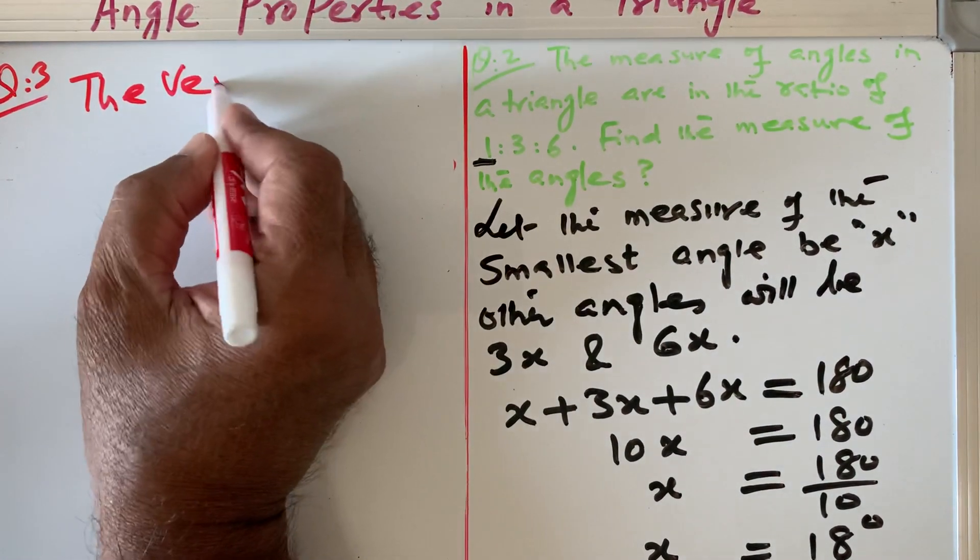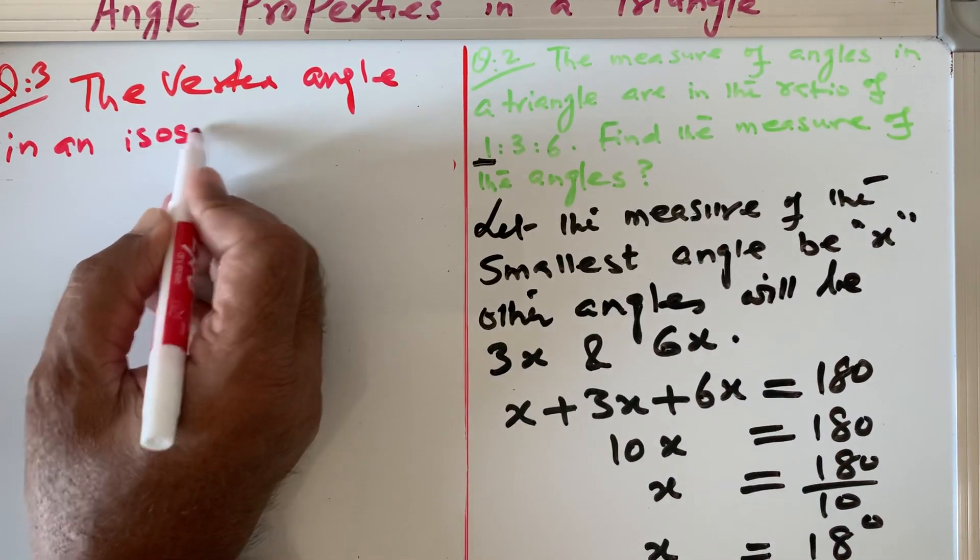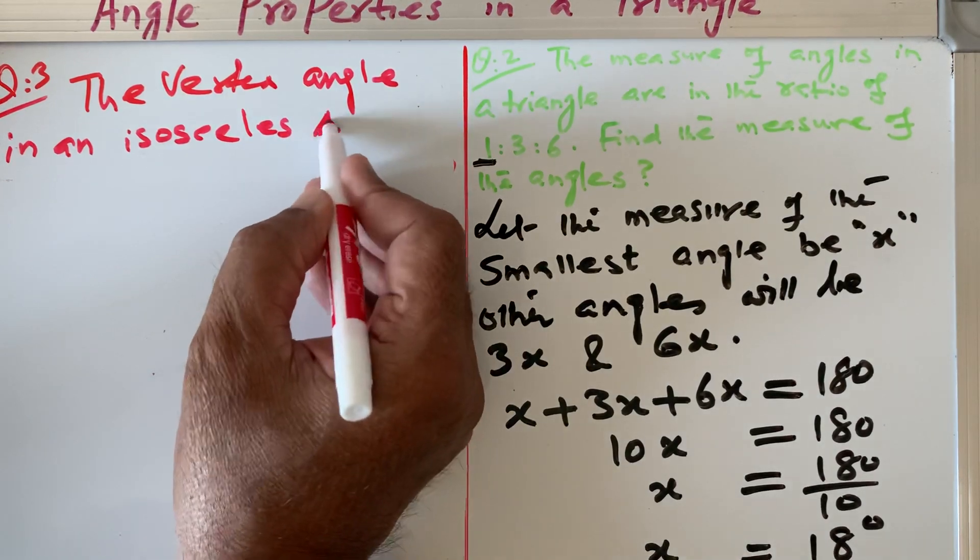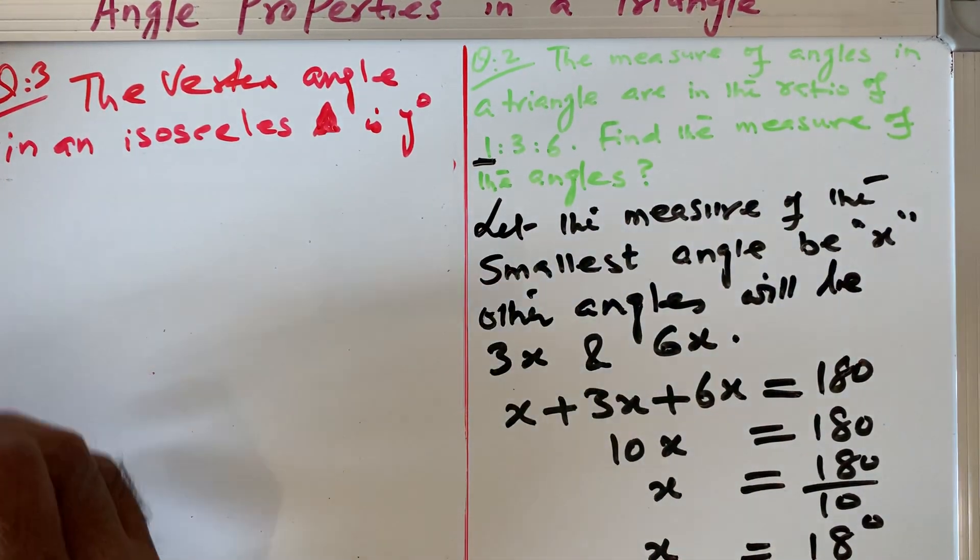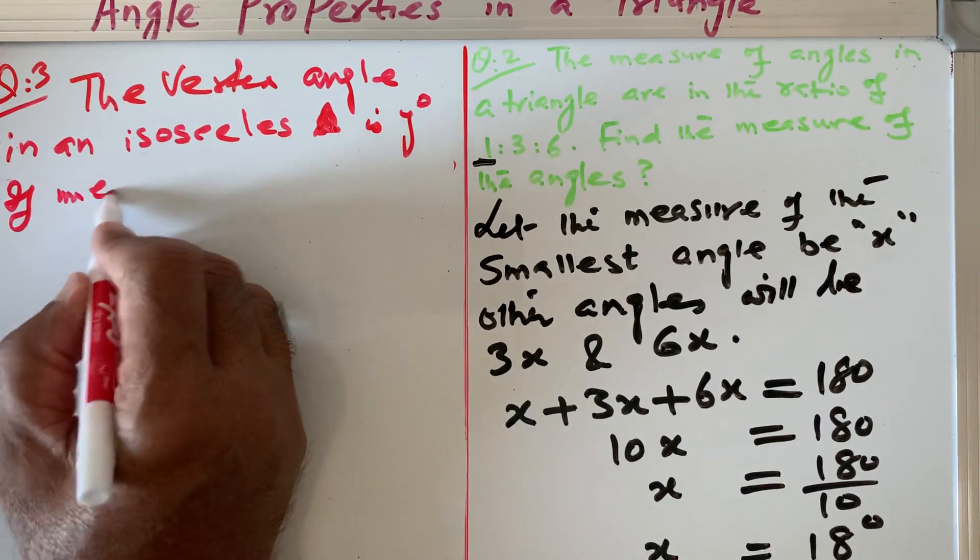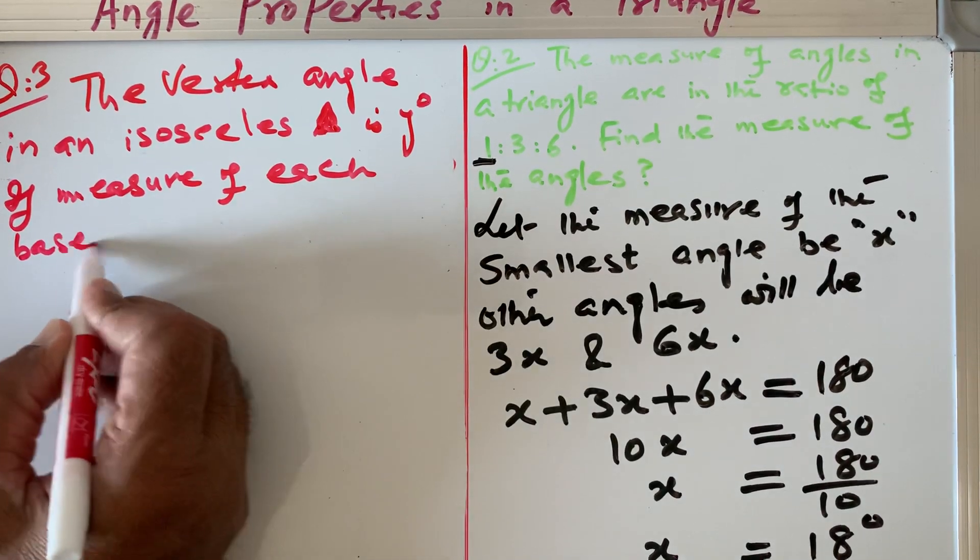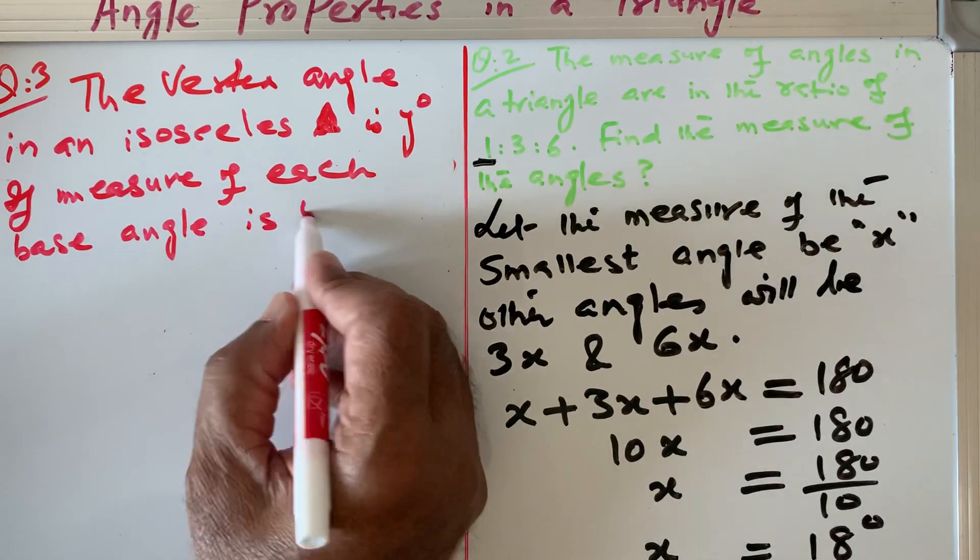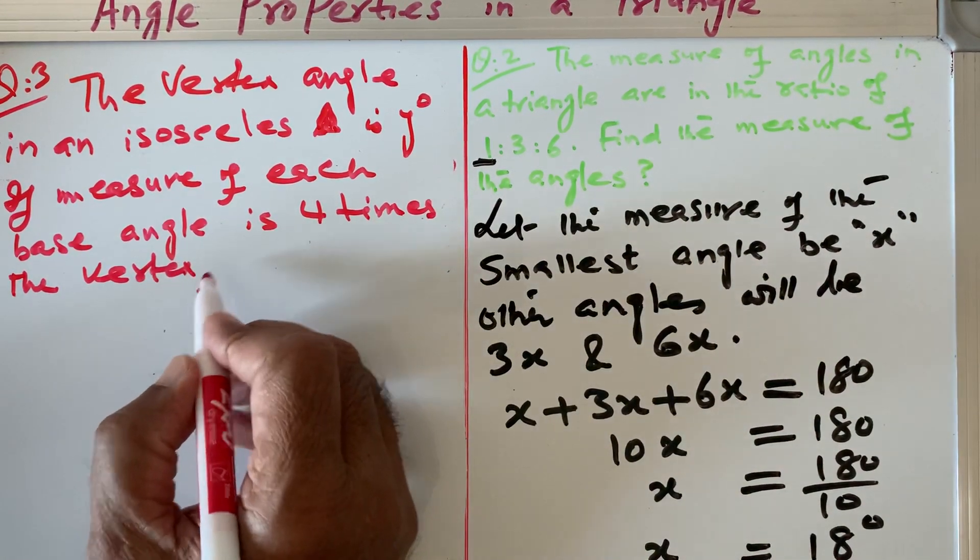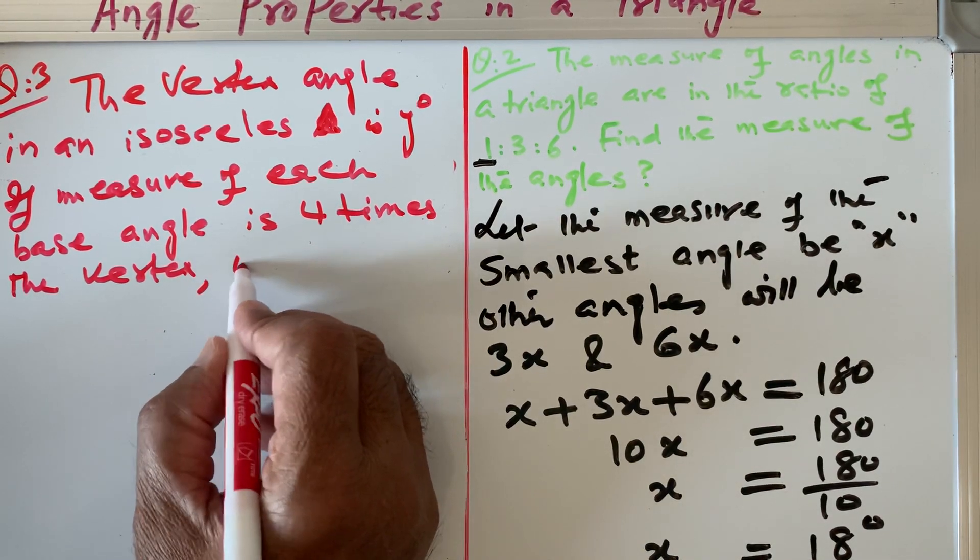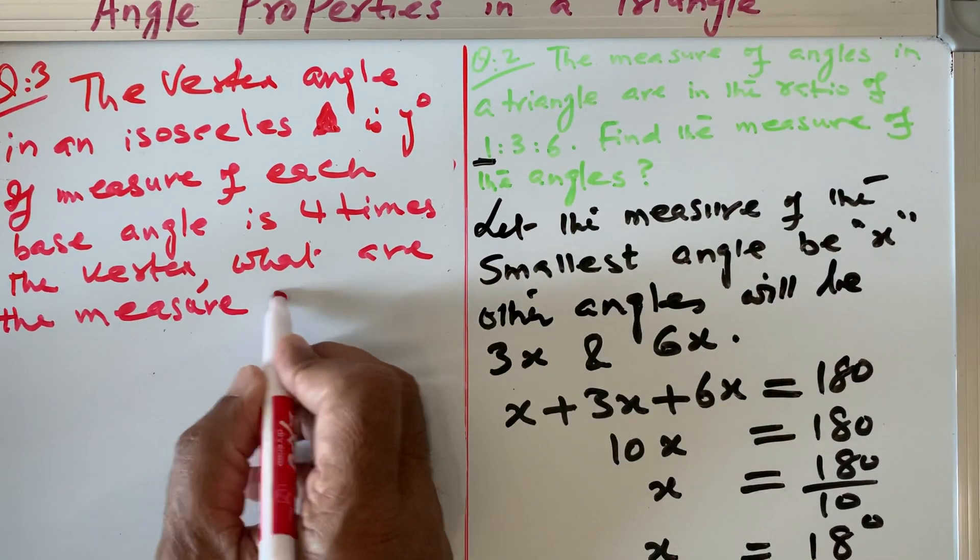Question number 3: The vertex angle in an isosceles triangle is y degrees. If the measure of each base angle is 4 times the vertex, what are the measures of each angle?